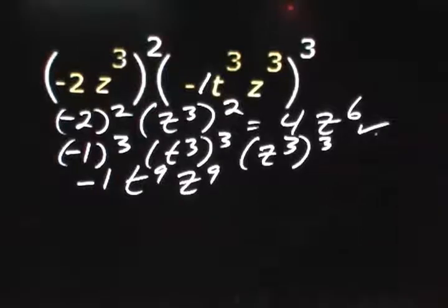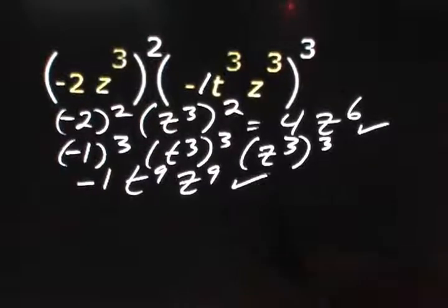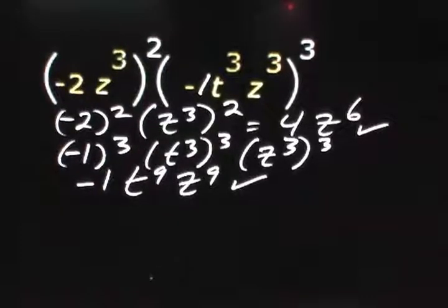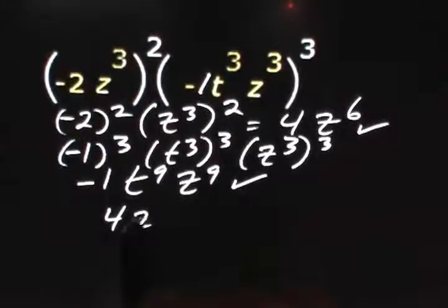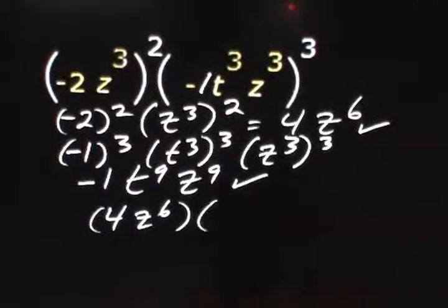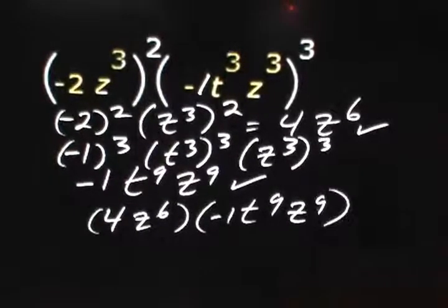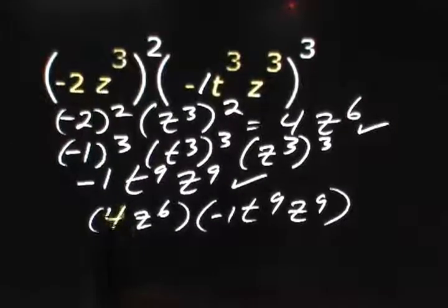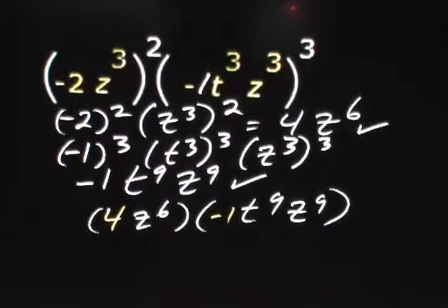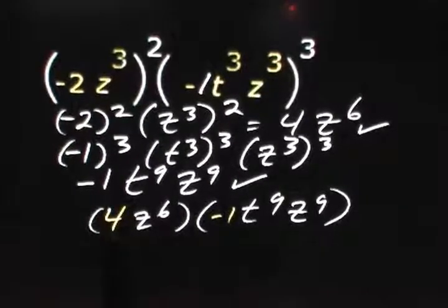We now multiply our 4z raised to the sixth times our negative 1, t to the ninth, z to the ninth. We'll multiply the coefficients first: 4 times negative 1 gives us negative 4.